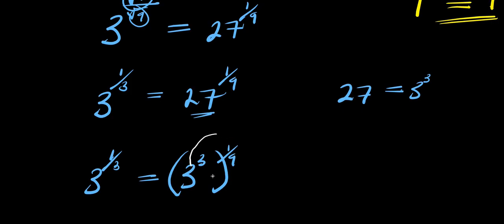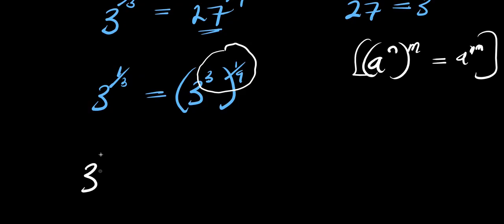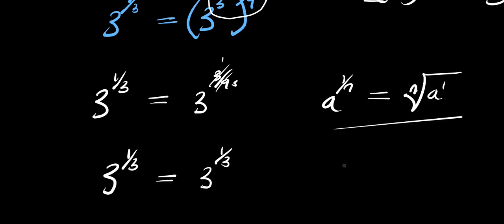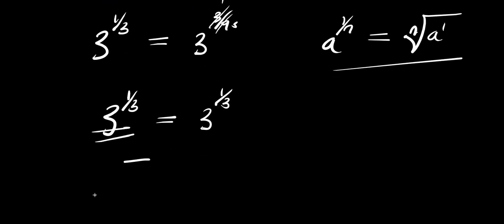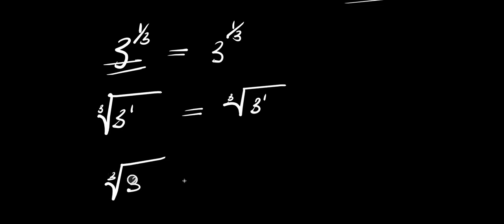Now remember 27 is 3 to the power of 3. So I replace 27 with 3 power 3, raised to the power of 1 over 9. I multiply the exponents: 3 times 1 over 9 equals 3 over 9, which simplifies to 1 over 3. So I have 3 power 1 over 3 equals 3 power 1 over 3. Using the identity that a to the power of 1 over n equals the nth root of a, both sides become the cube root of 3. Left hand side equals right hand side — t equals 1 over 9 is confirmed.